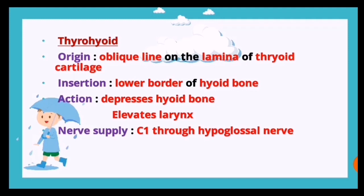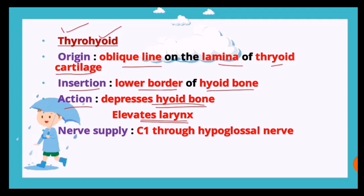The thyrohyoid: origin is the oblique line on the lamina of the thyroid cartilage, insertion is the lower border of the hyoid bone, action is it depresses the hyoid as well as elevates the larynx, and nerve supply is C1 through the hypoglossal nerve - this is an exception, as the other muscles are supplied by ansa cervicalis C1, C2, C3.